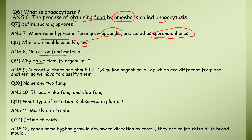Why do we classify organisms? Because currently there are about 1.7 to 1.8 million organisms, all of which are different from one another. Studying them separately is impossible. So we classify them - we keep one type of organisms in one category and study all of them together. That's why we classify them, because there is a wide variety of organisms.